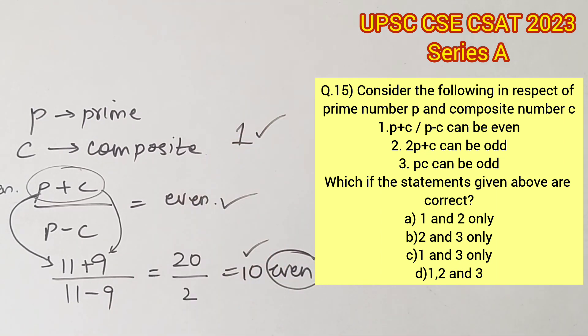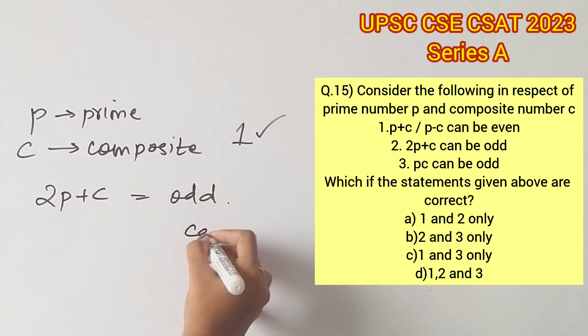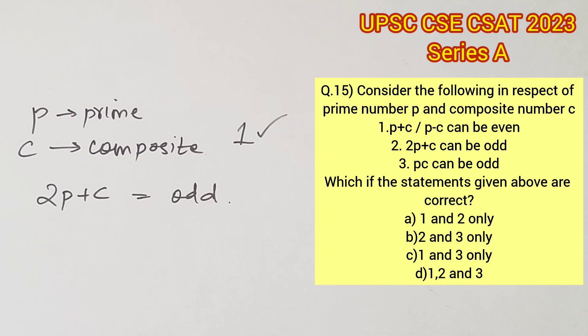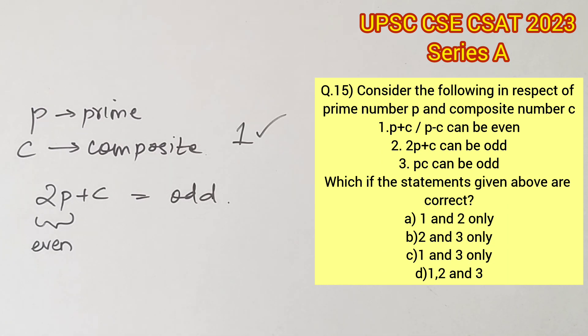Therefore statement 1 is true. The next statement says 2p plus c can be odd. It's enough for us to find just one case that can prove this. We know that this term is going to be an even number because it's multiplied with 2, and adding an odd number to an even number will provide a result that is also an odd number.